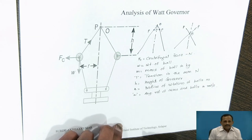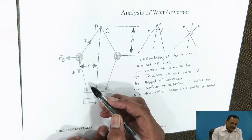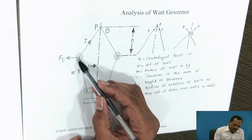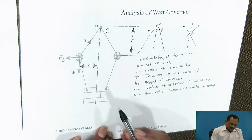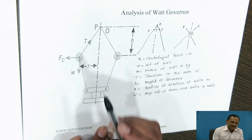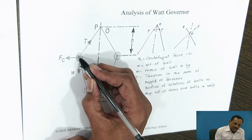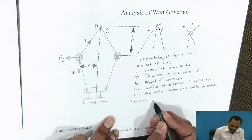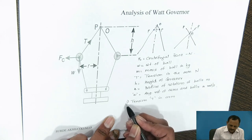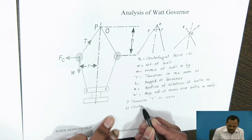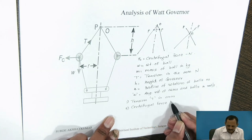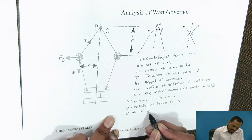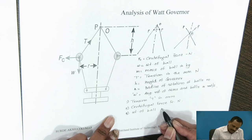In the analysis of VAT Governor, it is assumed that the weight of the link, arm, and sleeve is negligible. Therefore, the fly ball in equilibrium condition is under three forces: tension T in the arm, the centrifugal force Fc acting on the ball in Newtons, and the weight of the ball in Newtons.